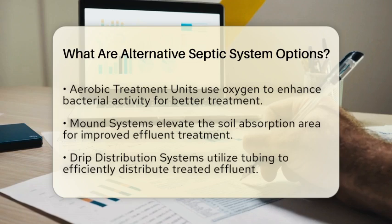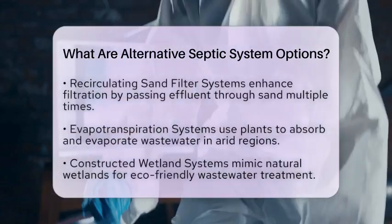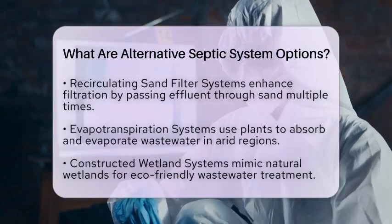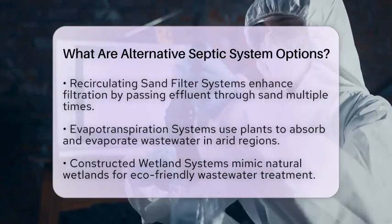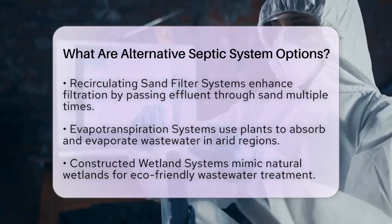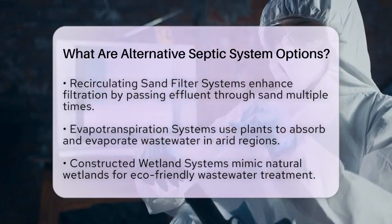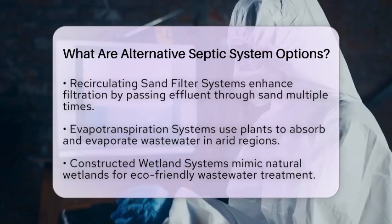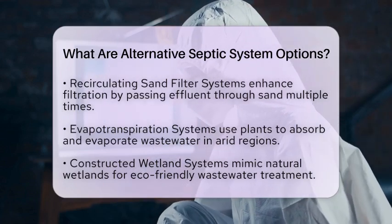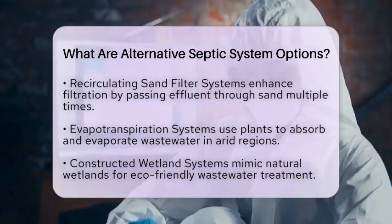Then there are recirculating sand filter systems. These pass effluent through sand multiple times, enhancing filtration and treatment. They are effective in various soil conditions. For arid regions, evapotranspiration systems are a great choice. They rely on plants to absorb and evaporate wastewater, making them suitable for areas with limited water resources.